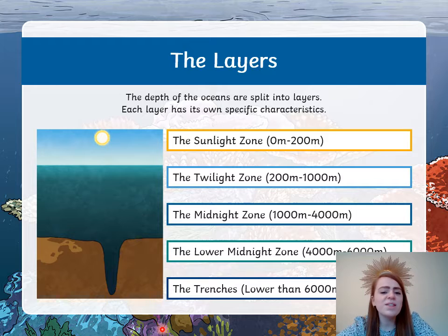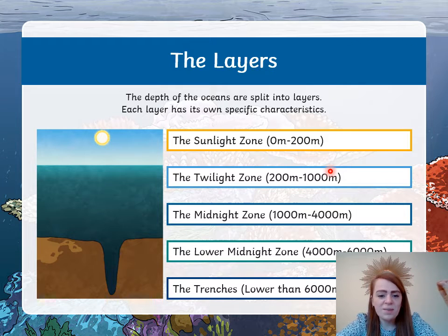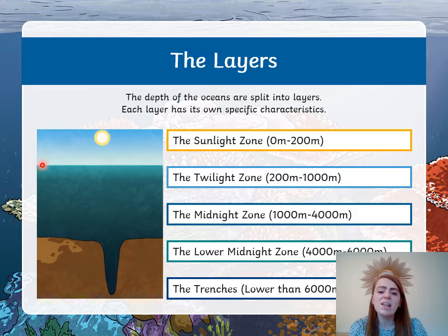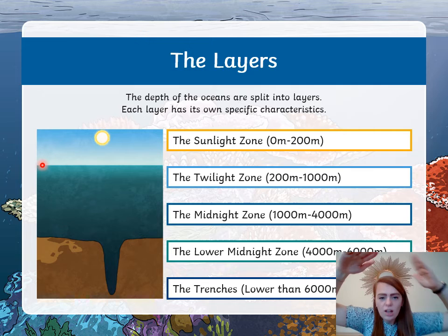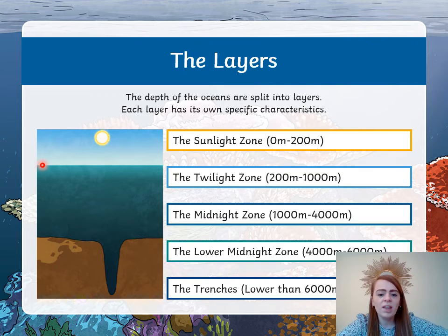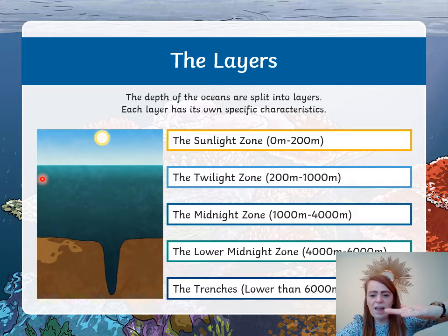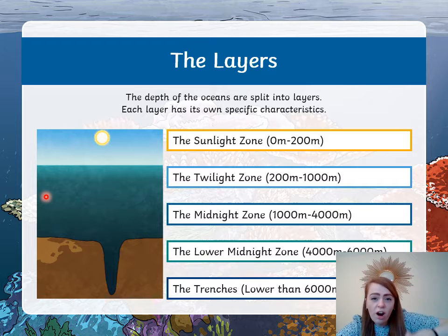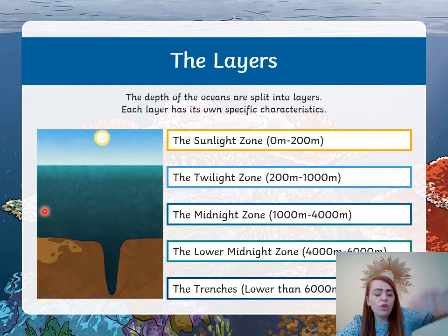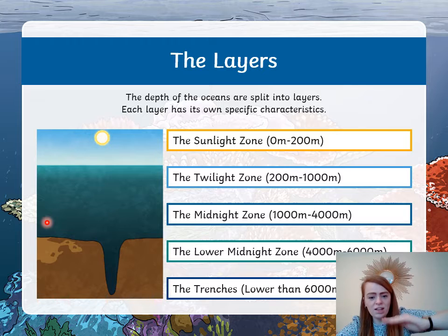So what exactly are these layers? Each layer has its own specific characteristics. We've got the sunlight zone — that is the top zone, found from 0 to 200 metres down. Then as you go towards 200 metres depth and down to 1,000 metres depth is the twilight zone. After that, we've got the midnight zone, from 1,000 metres down to 4,000 metres depth. After that you've got the lower midnight zone, from 4,000 metres to 6,000 metres depth. And after that you've got the trenches, which is lower than 6,000 metres — and the Mariana Trench is one of those trench areas.